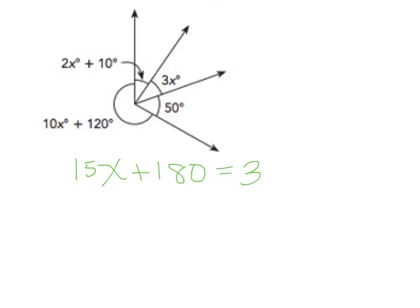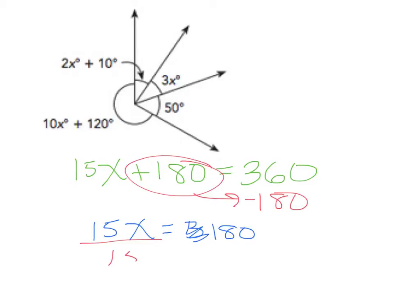We're going to set that equal to 360 degrees, which is a full circle. The 180 will go over and turn negative. That'll be 15x equals 360 minus 180, which is 180. So 15x equals 180. Divide both sides by 15, and x will equal 12 because 180 divided by 15 is 12. Again, because it's a full circle, we set it equal to 360, add your letters, add your constants, take your constant over, change the sign, and you get 12.